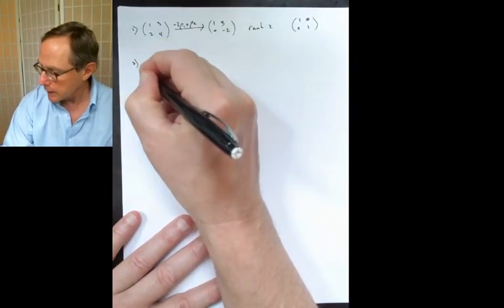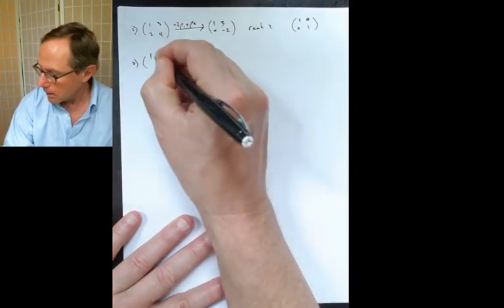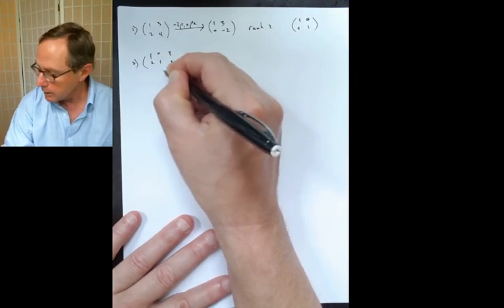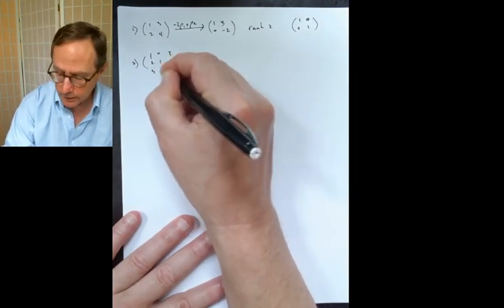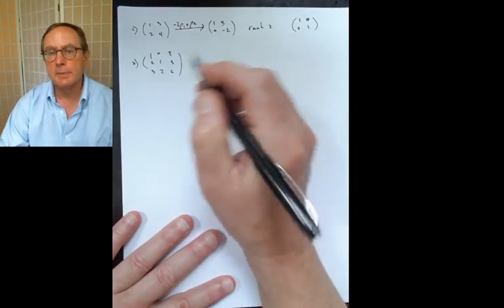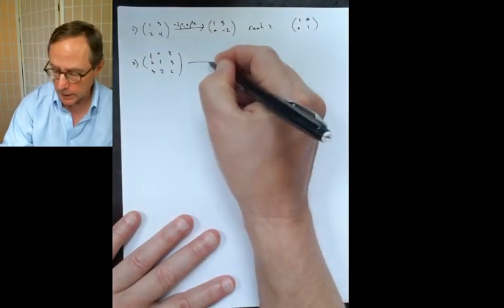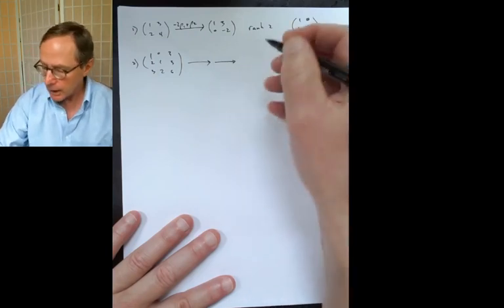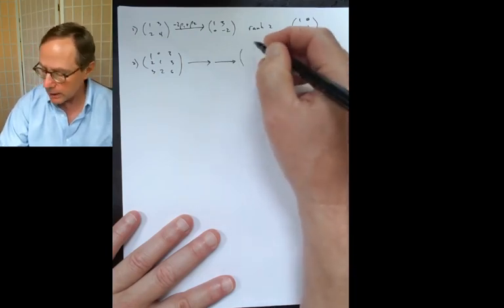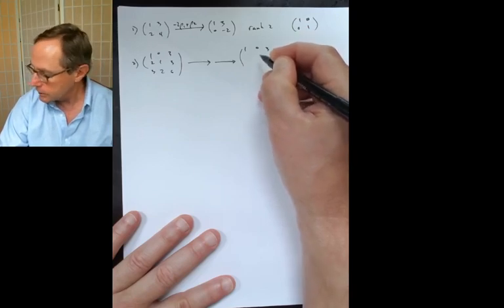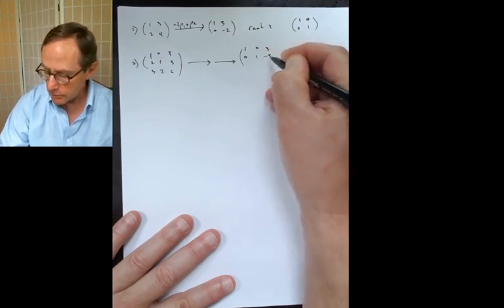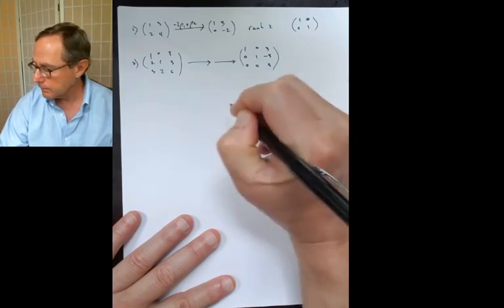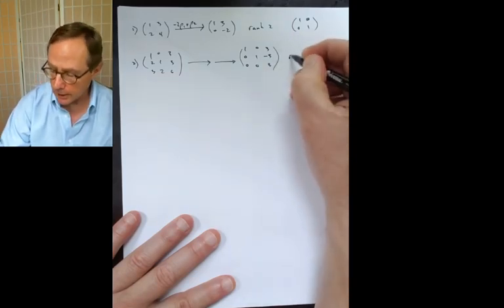Number two is the matrix [1, 0, 3; 2, 1, 3; 3, 2, 6; 3, 2, 6]. After Gauss's method in the standard way, you get [1, 0, 3; 0, 1, -3; 0, 0, 3]. There are three non-zero rows, so we're looking at rank three.